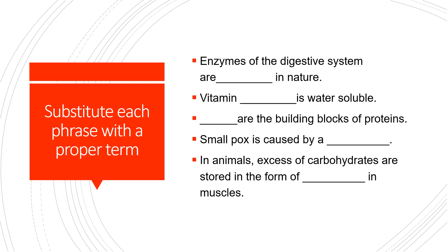The next part also carries 5 marks: 'Substitute Each Phrase with a Proper Term.' Enzymes of the digestive system are dash in nature. Write which vitamins are water-soluble. Dash are the building blocks of protein. Smallpox is caused by what? In animals, excess carbohydrates are stored in the form of dash in the muscles. These are all basic questions — please write properly.